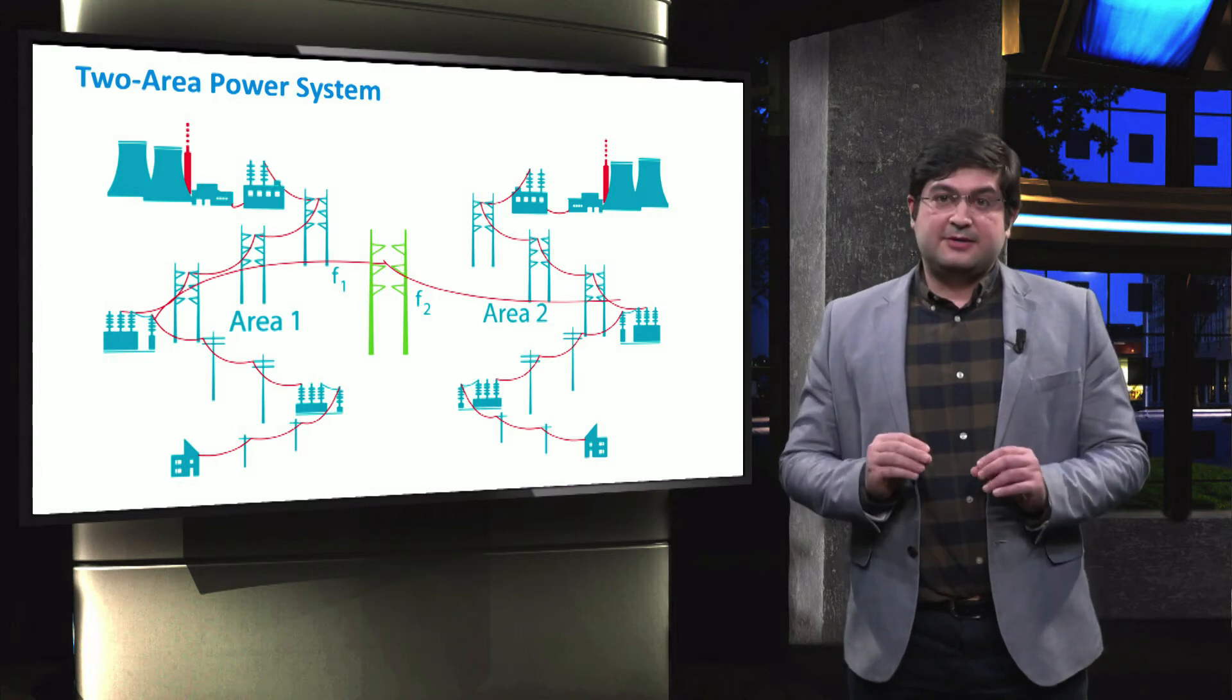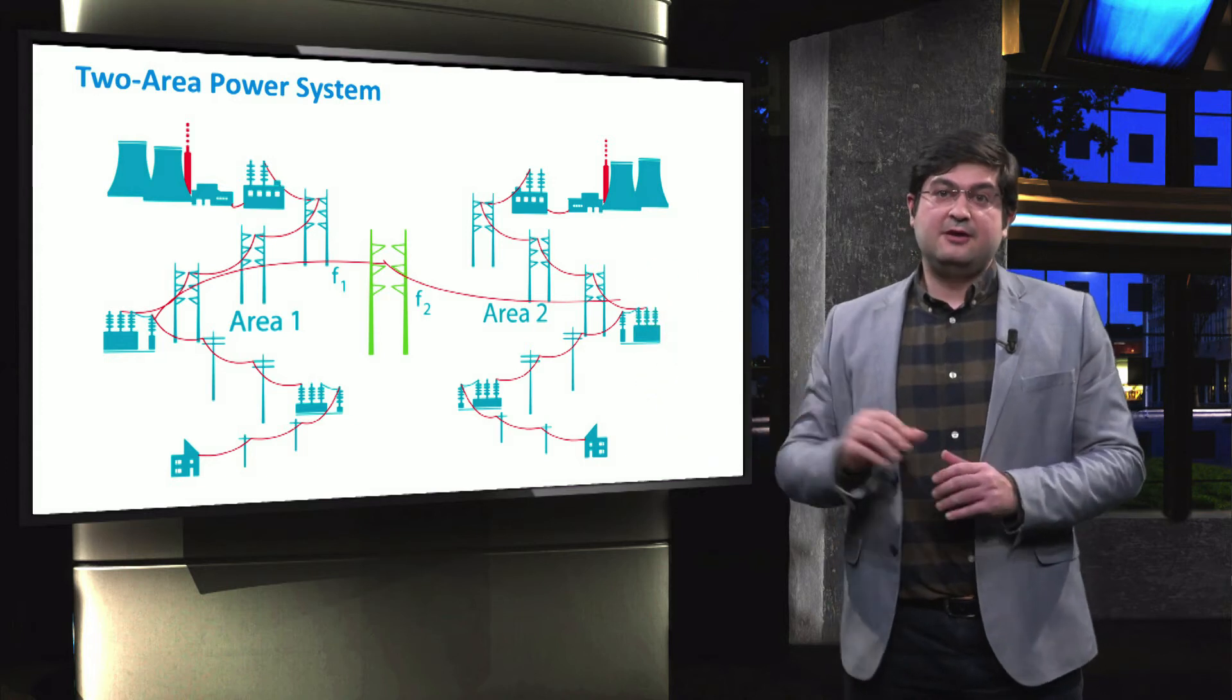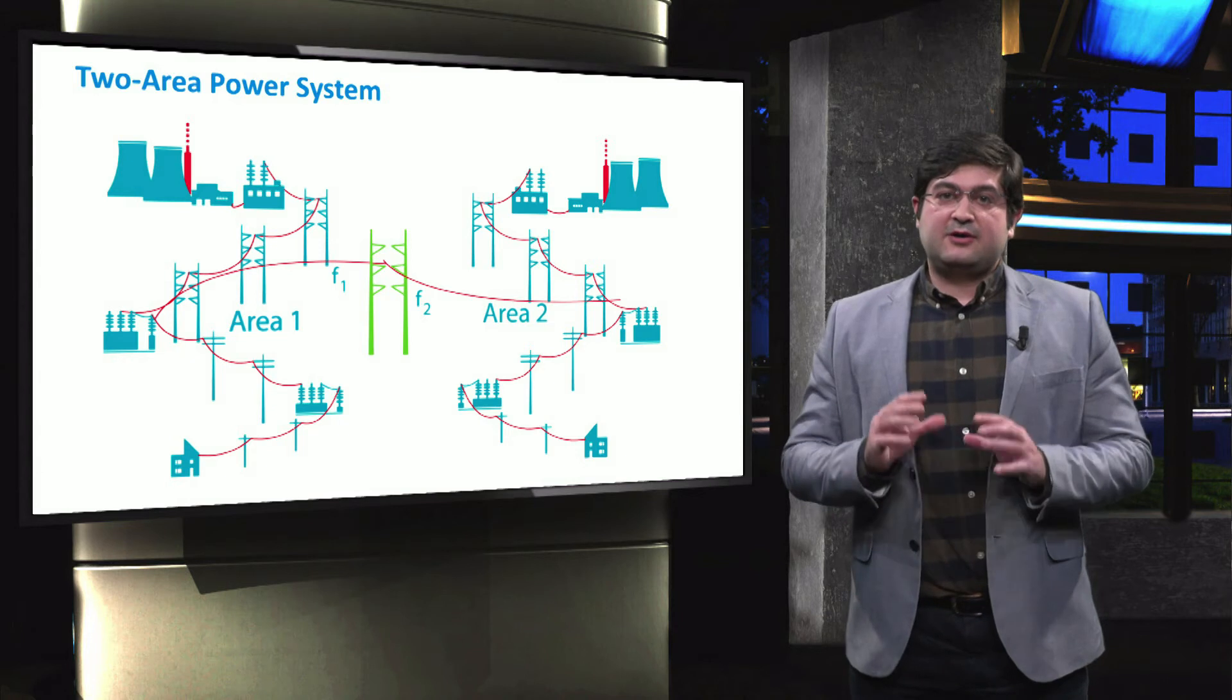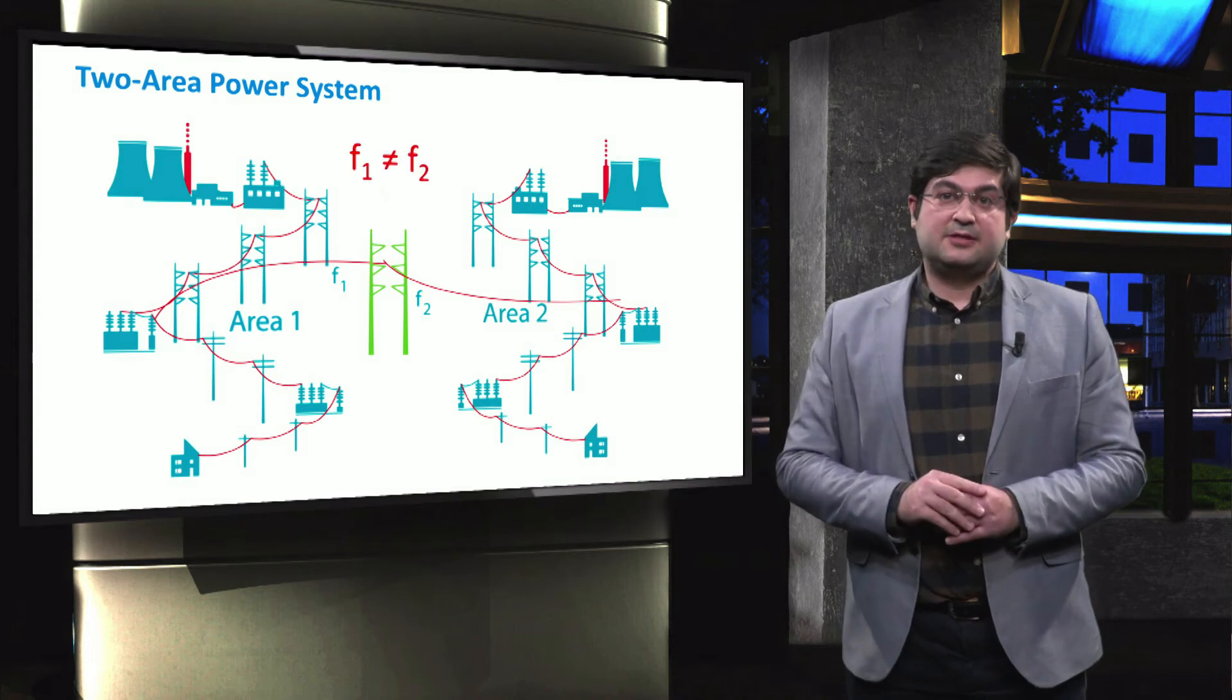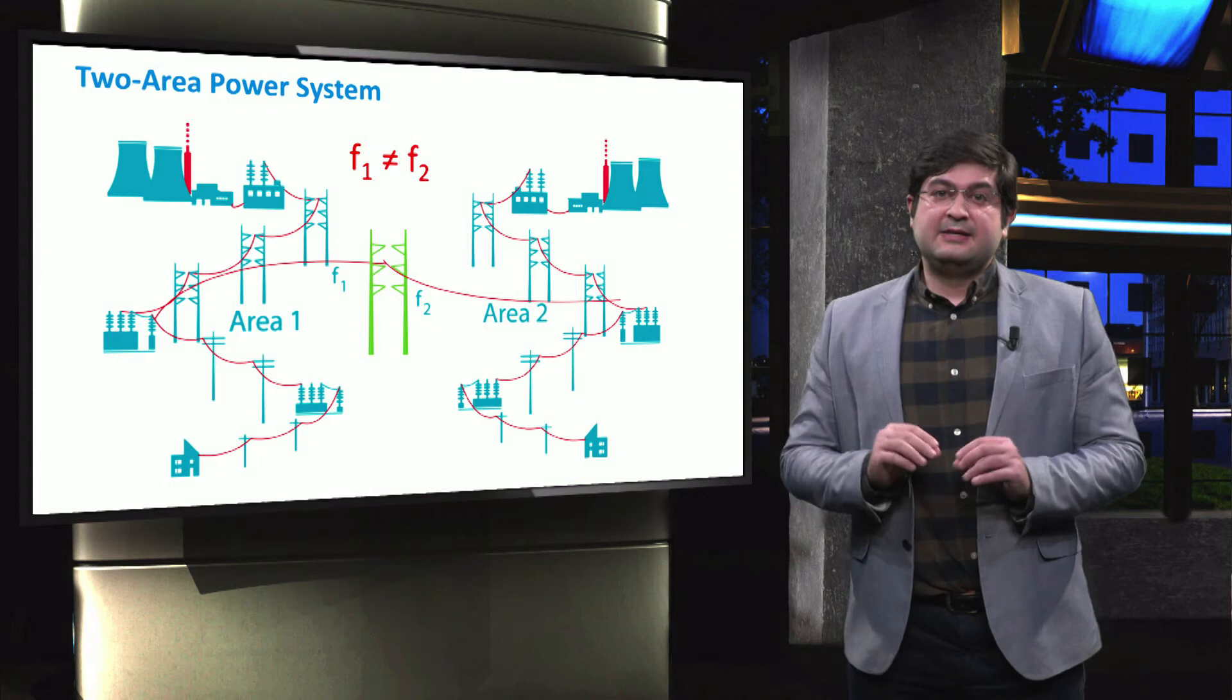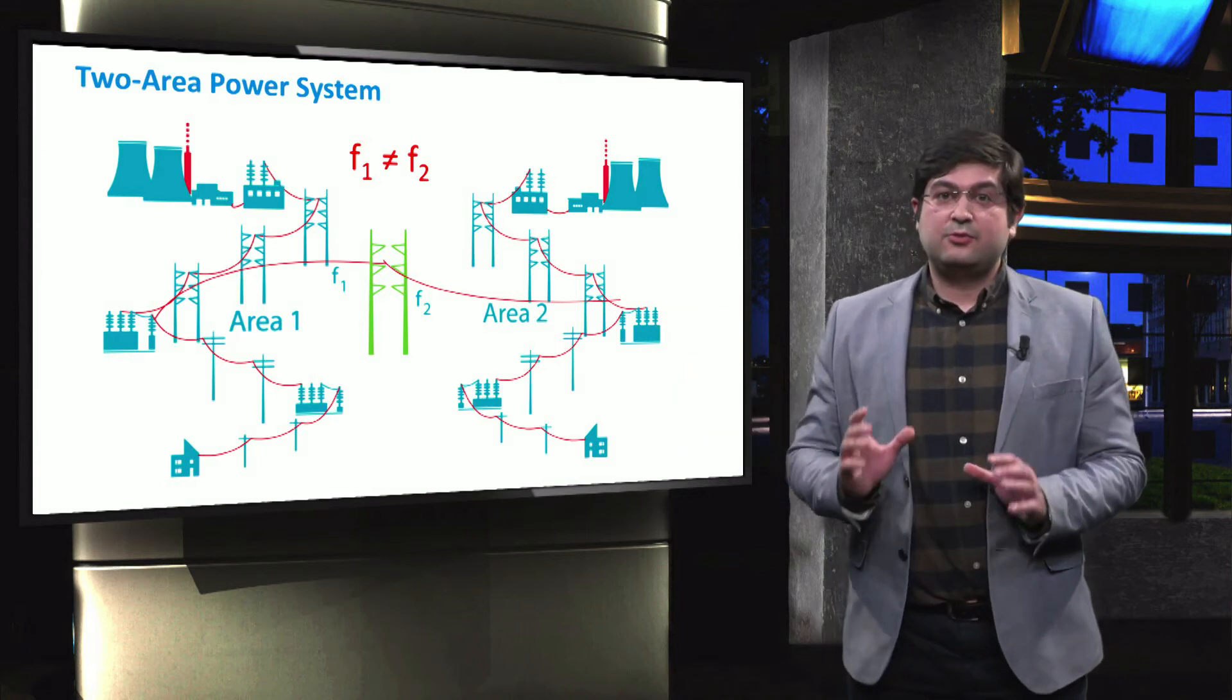As shown in the figure, two areas which are connected through a transmission line are operated at the nominal frequency. If a contingency event occurs in one of these areas, then the frequencies of these two areas start to deviate. However, during the event, the frequency of the first area is not equal to the frequency of the second one.